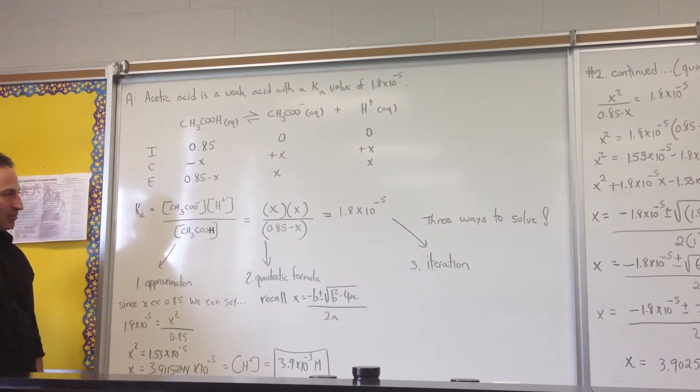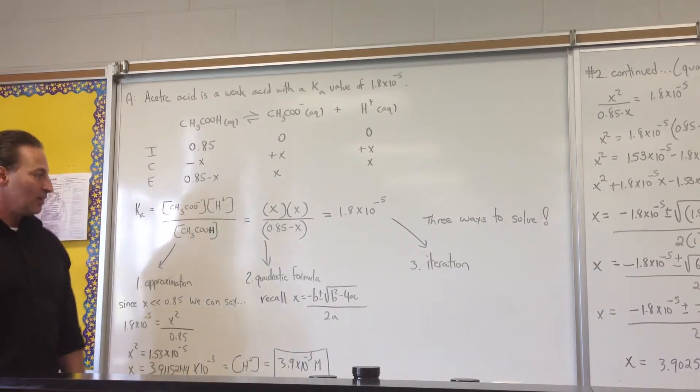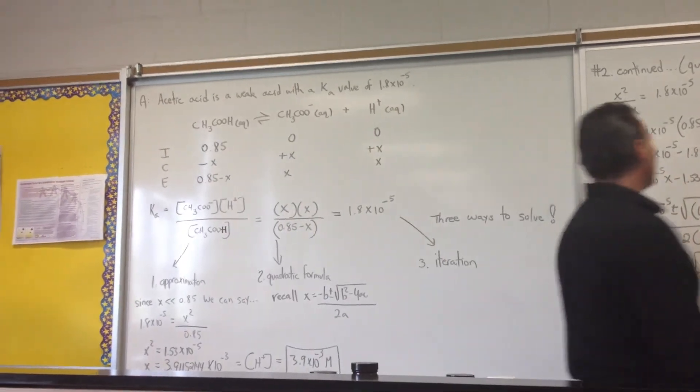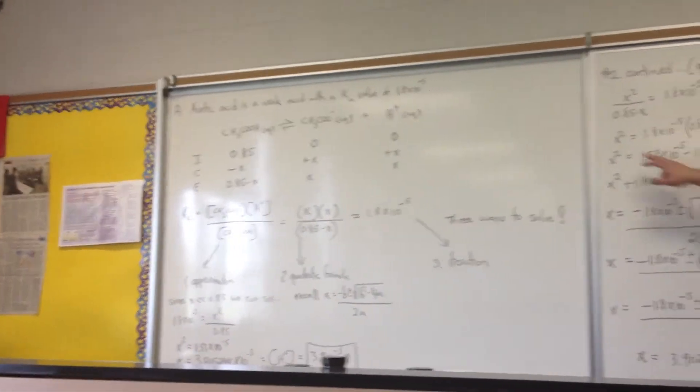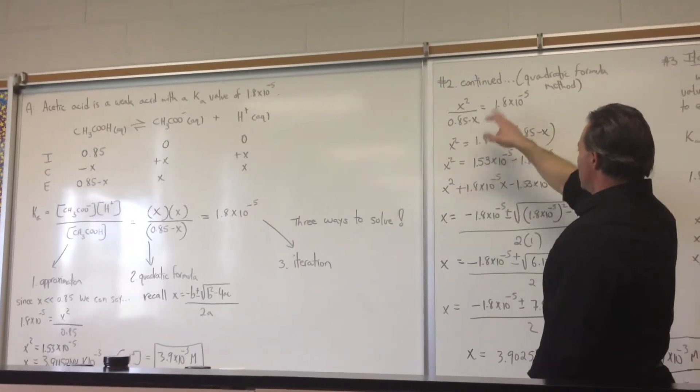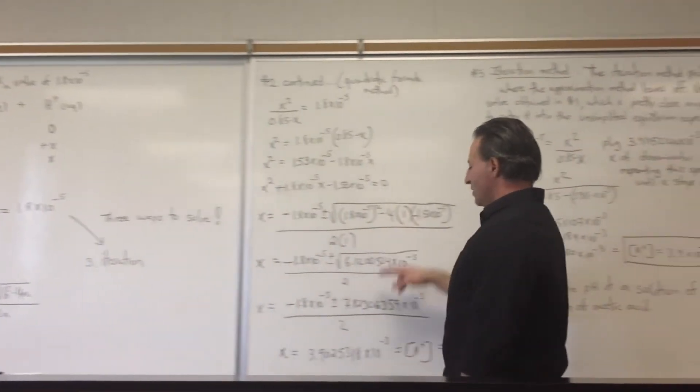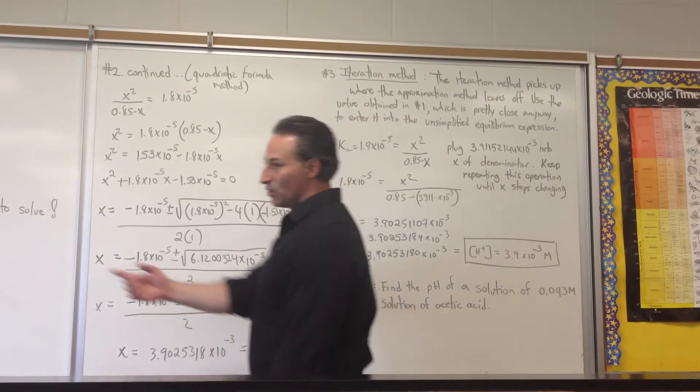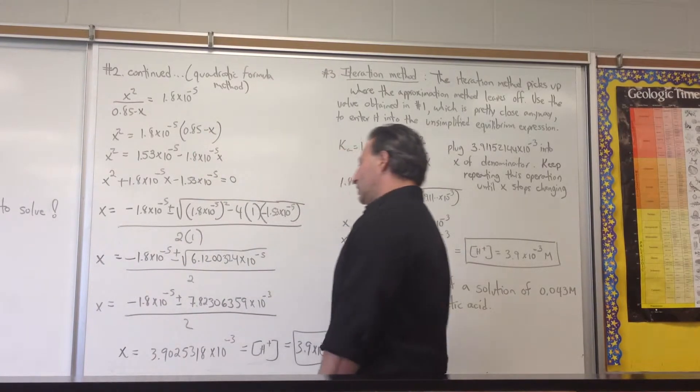The second technique is probably the most accurate and can be the fastest depending on the numbers. Sometimes when you write numbers into the quadratic formula, it can be very cumbersome because the numbers are long, and it's easy to make mistakes. You would enter these numbers into the quadratic formula after developing the trinomial. We write a trinomial, having expanded the brackets, and we enter all the numbers. We get X equals 3.9025318 times 10 to the minus 3, which is very close to what we got in the first approximation.